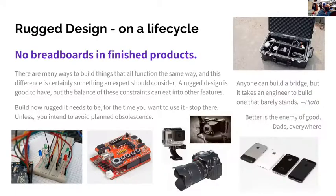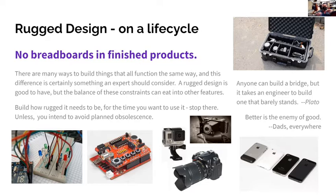Rugged design is definitely worth thinking about. Don't put breadboards in your finished product - you want something sturdy enough to last if you want it to last for a long time. Moving from a breadboard to a circuit board can be helpful. Here are three different versions of ruggedness in cameras - the top one was all that was available at the time with its paper leathery material. Then the Nikon D90 and the GoPro - both can shoot in 4K but there are lots of differences. How rugged do you need it to be is something interesting to consider.